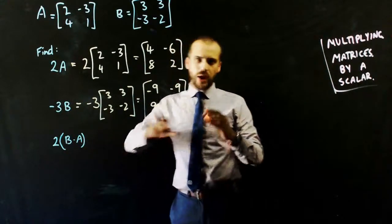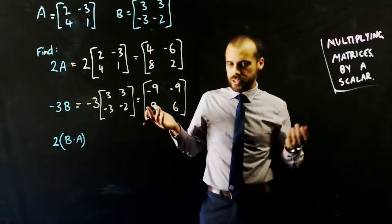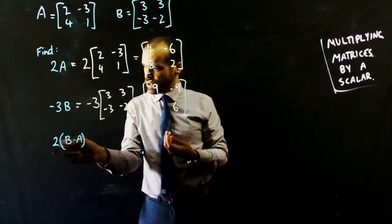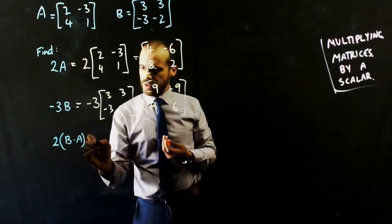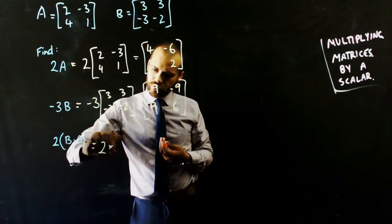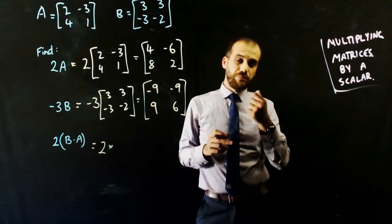Finally, our order of operations applies all throughout this. So if it's 2 times B minus A, that's going to be 2 times, and then we need to know what B minus A is.